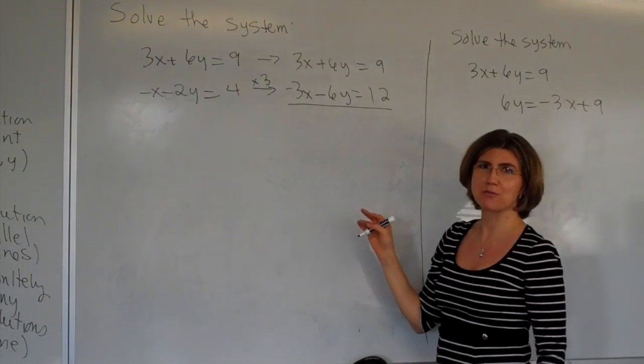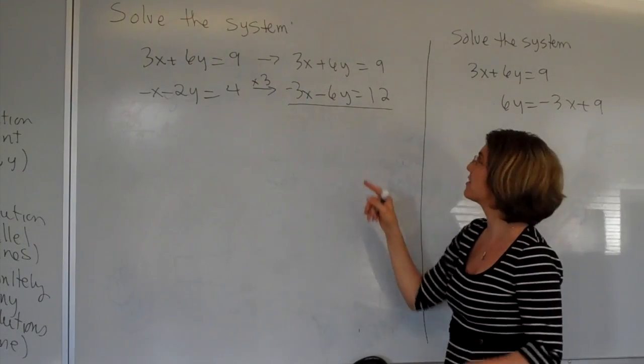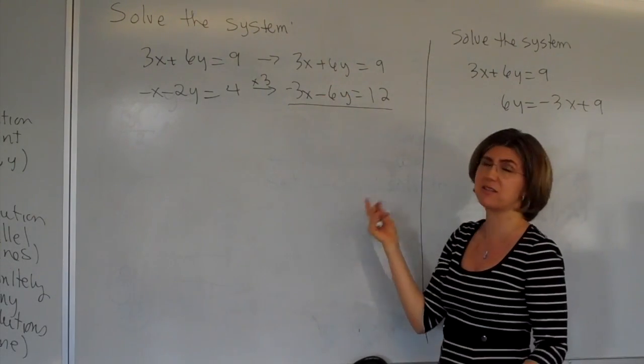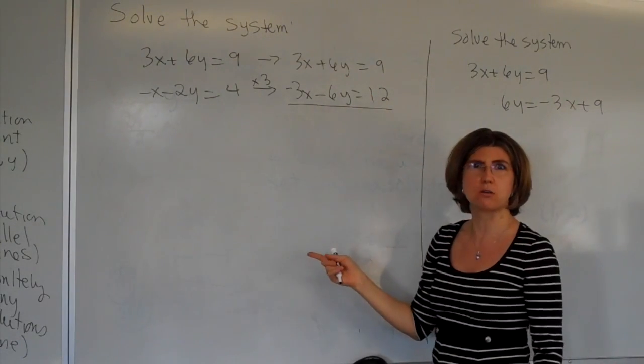I'm just copying it. Now, when I add this one up, as one of my students would say, it's working out too good. Because look what happens. 3x minus 3x is 0. Well, that's okay. But look at this. 6y minus 6y, that's 0 also.